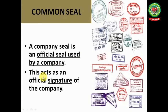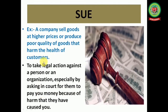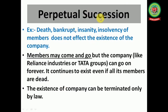Next is common seal — a company seal is an official seal used by a company and acts as the official signature of the company. Next is sue — for example, if a company sells goods at higher prices or produces poor quality goods that harm the health of customers, you can take legal action against a person or organization, especially by asking in court for them to pay you money for the harm caused. This process is called suing.